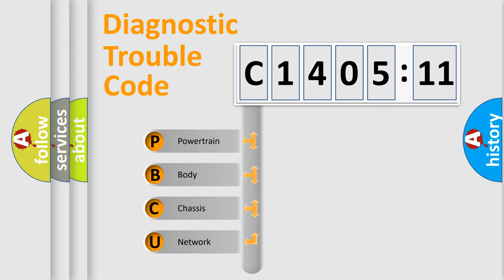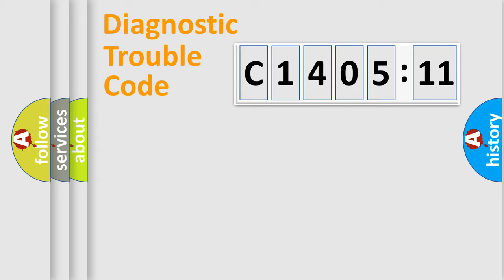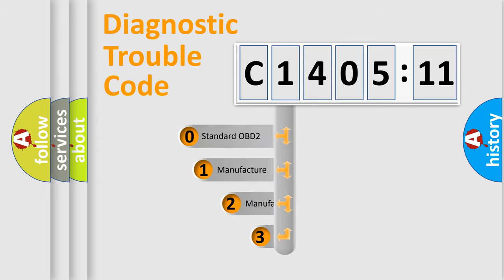We divide the electric system of automobile into four basic units: Powertrain, Body, Chassis, and Network. This distribution is defined in the first character code.